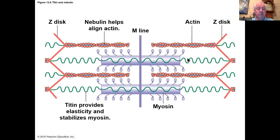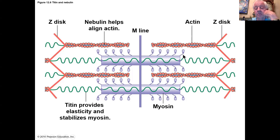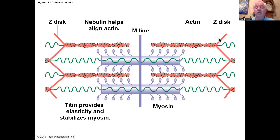Here are the main parts of a sarcomere: the thin filaments and the thick filaments. Also part of the sarcomere is a large molecule called titin, which is actually the largest molecule we know of. When muscle contraction happens, the myosin heads attach and flex — called a power stroke — pulling the thin filaments toward the M line. This causes the entire sarcomere to shrink and get shorter.